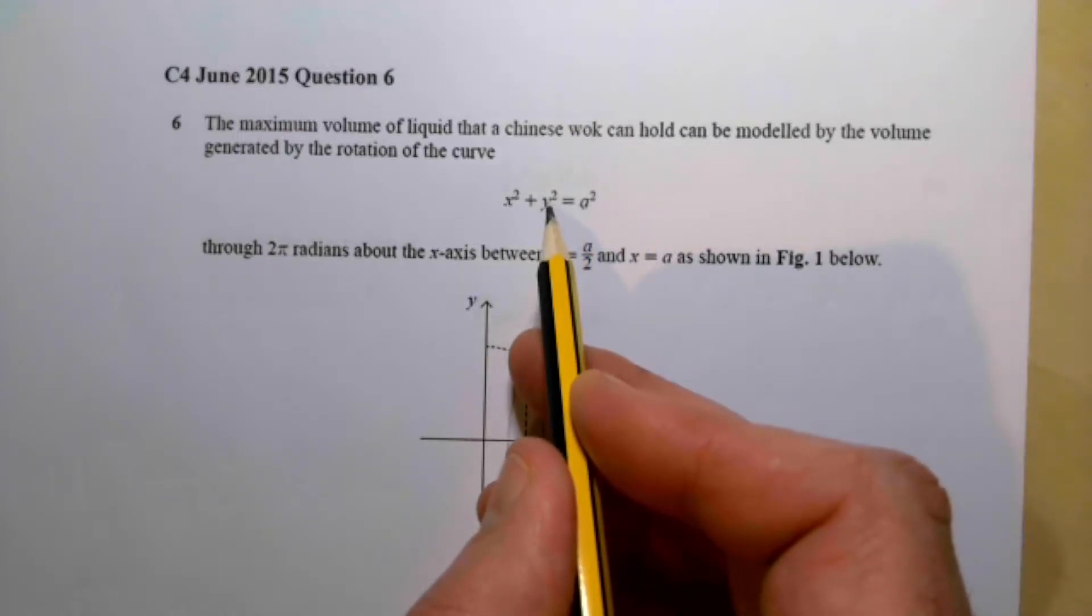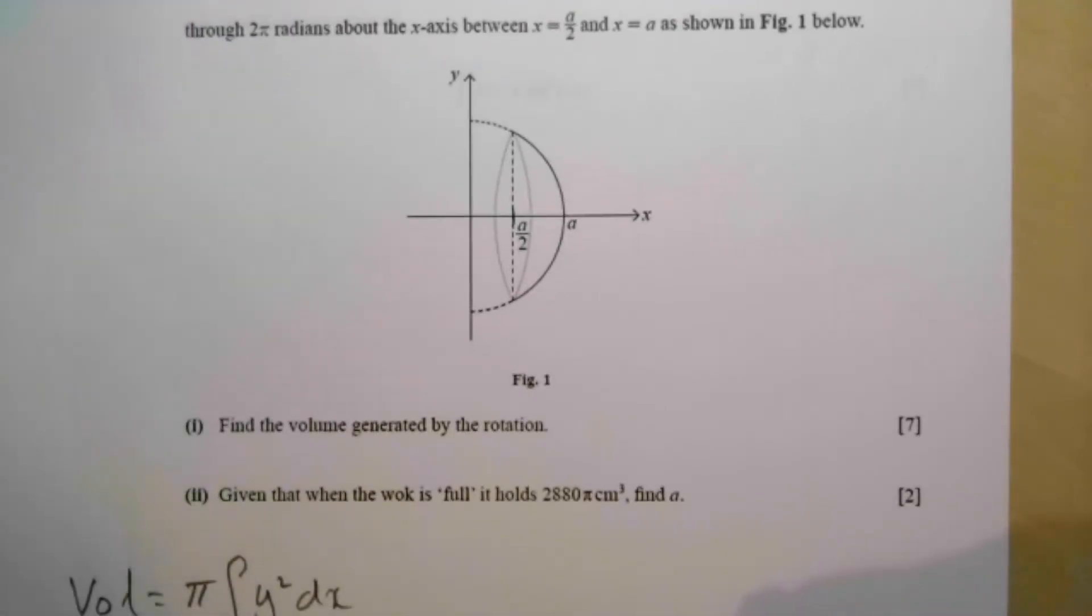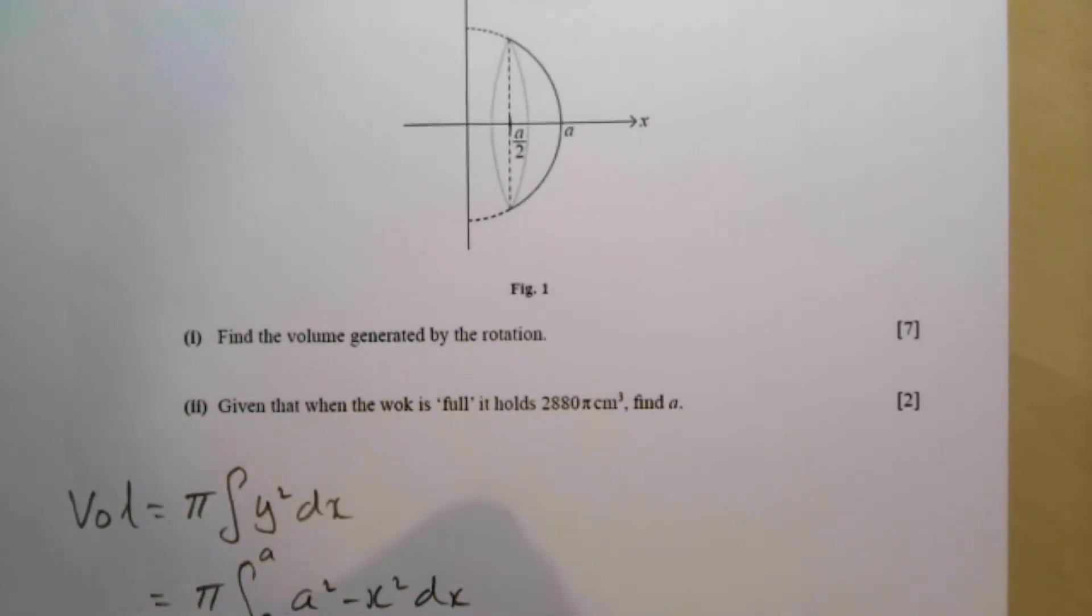And note that's already the y squared, so most of these questions you end up squaring the y, but we already have the y squared in this particular case. So it's a squared minus x squared dx, and we treat the a as if it's a number.